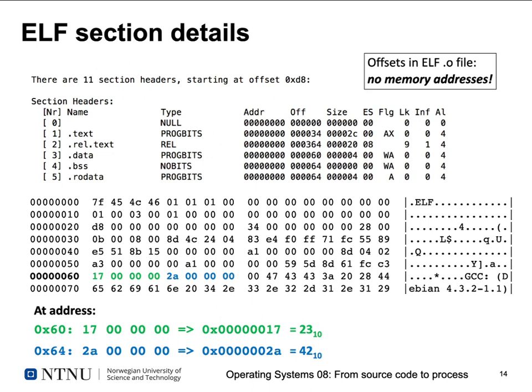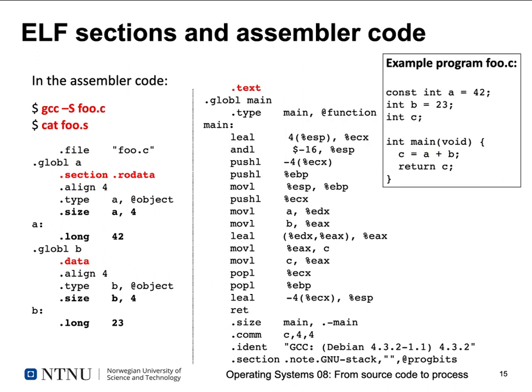In C we know that program text ends up in the .text section, read-only data and regular data and BSS each have their sections. Looking at the assembler source code generated by gcc -S for foo.c: you see regular machine instructions, labels indicating symbols such as branch targets, and pseudo-commands or pseudo-operations starting with a dot. For example, .file tells us the source was foo.c, and a global variable a ends up in the read-only data section, aligned by 4 bytes, with a size of 4 bytes.